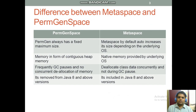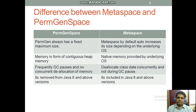Now let's consider the key differences between Metaspace and PermGen storage space. Metaspace was introduced in Java 8; previous to that we had PermGen space. The major differences are: PermGen always has a fixed maximum size — you can't set beyond that fixed maximum size. Whereas in Metaspace, by default it auto-increases its size depending on the underlying OS, taking into consideration the memory requirement, and can automatically adjust the size.